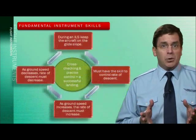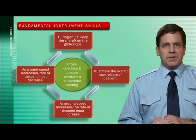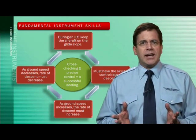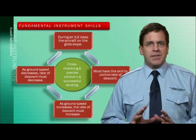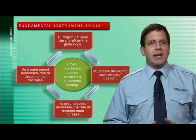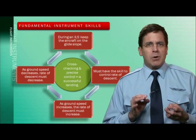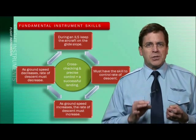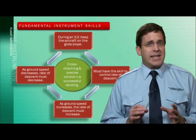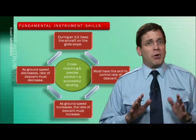When executing an ILS approach, the pilot must keep the aircraft on the electronic glide slope. This requires the ability to establish the proper rate of descent for the ground speed. As ground speed increases, the rate of descent required to maintain the glide slope must also increase. As ground speed decreases, the required rate of descent also decreases. By first cross-checking the instruments and then interpreting them, the pilot is able to precisely control the aircraft all the way to a successful landing.